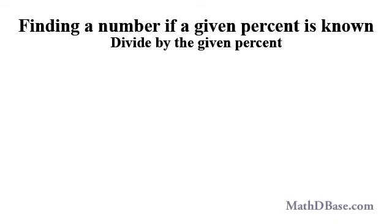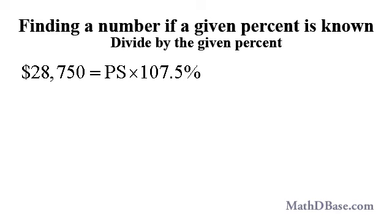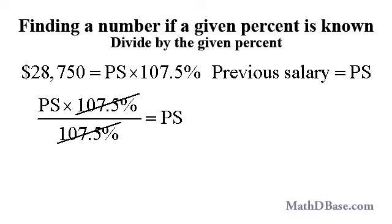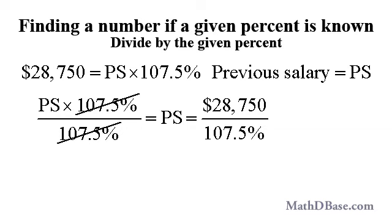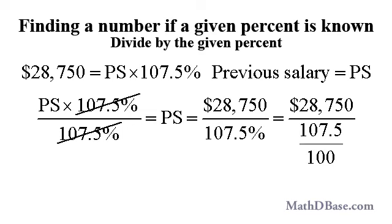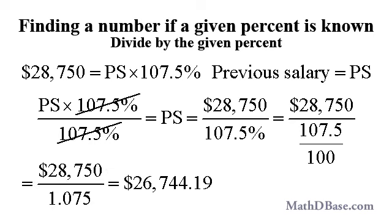Francine received a 7.5% raise, taking her annual salary to $28,750. How much was she making before the raise? $28,750 represents 107.5%, 100% plus 7.5% of Francine's previous salary, which we will abbreviate as PS. So $28,750 is equal to PS times 107.5%. We can find the amount of the original salary by dividing the increased salary by the percentage that the increased salary represents, or $28,750 divided by 107.5%. Since 107.5% is equal to 1.075, the original salary to the nearest penny is $26,744.19.